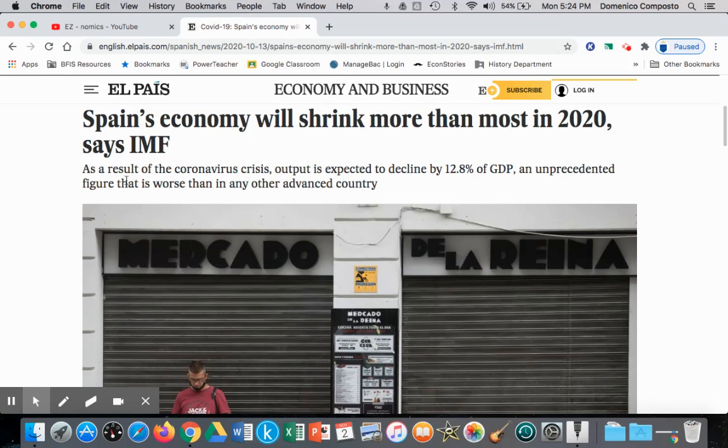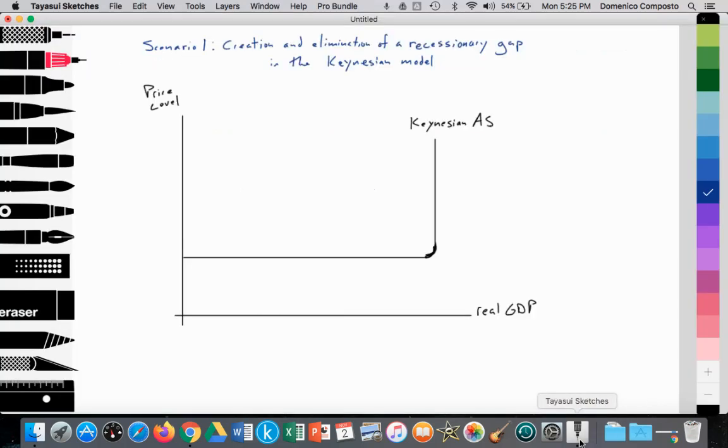This is just one example of that. The subtitle states that as a result of the coronavirus crisis, output production is expected to decline by 12.8% of GDP, which unfortunately is an unprecedented figure that is worse than in any other advanced country. So this is a pretty dire situation for Spain and for so many other nations. So let's apply a model to understand this.